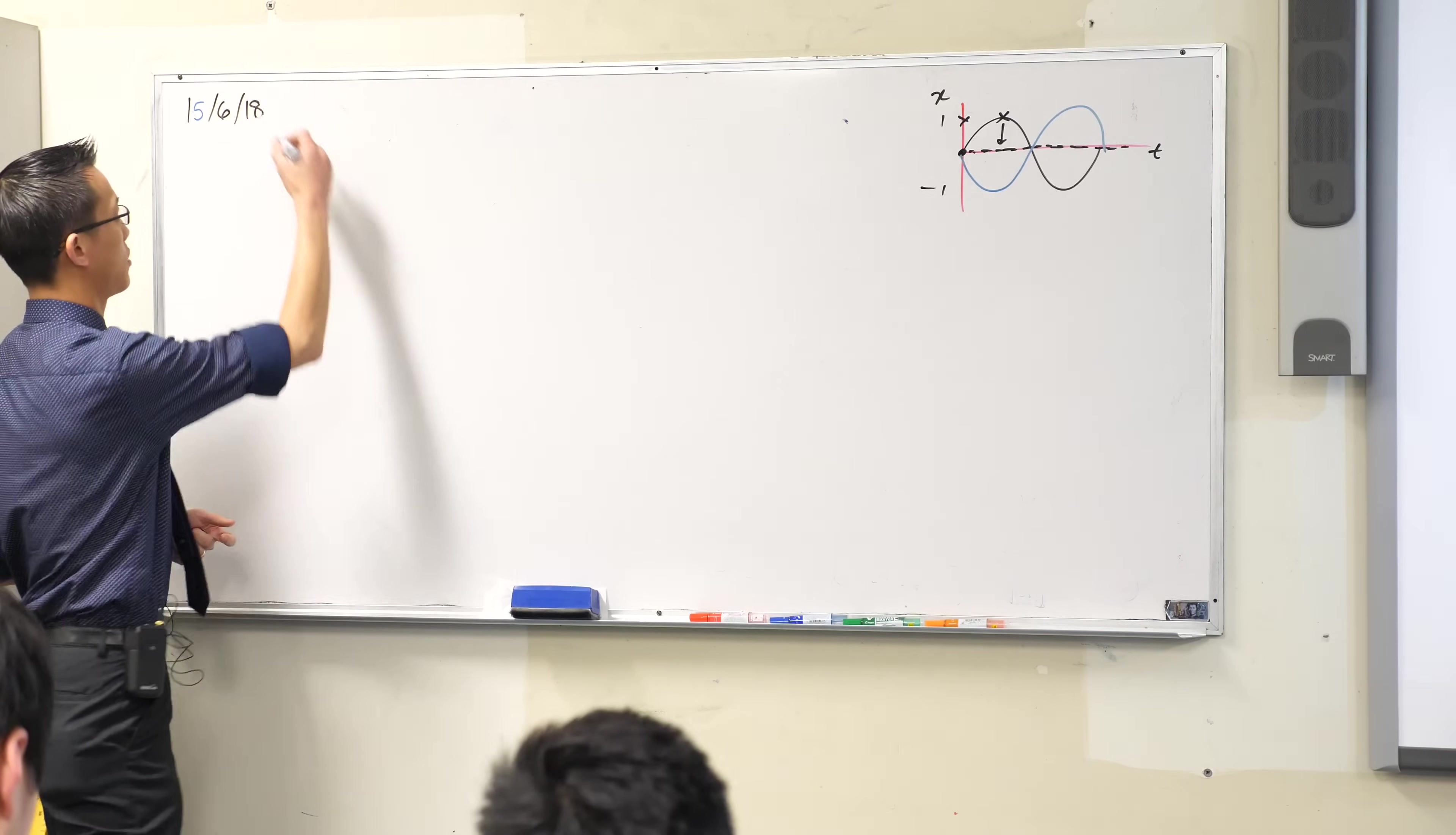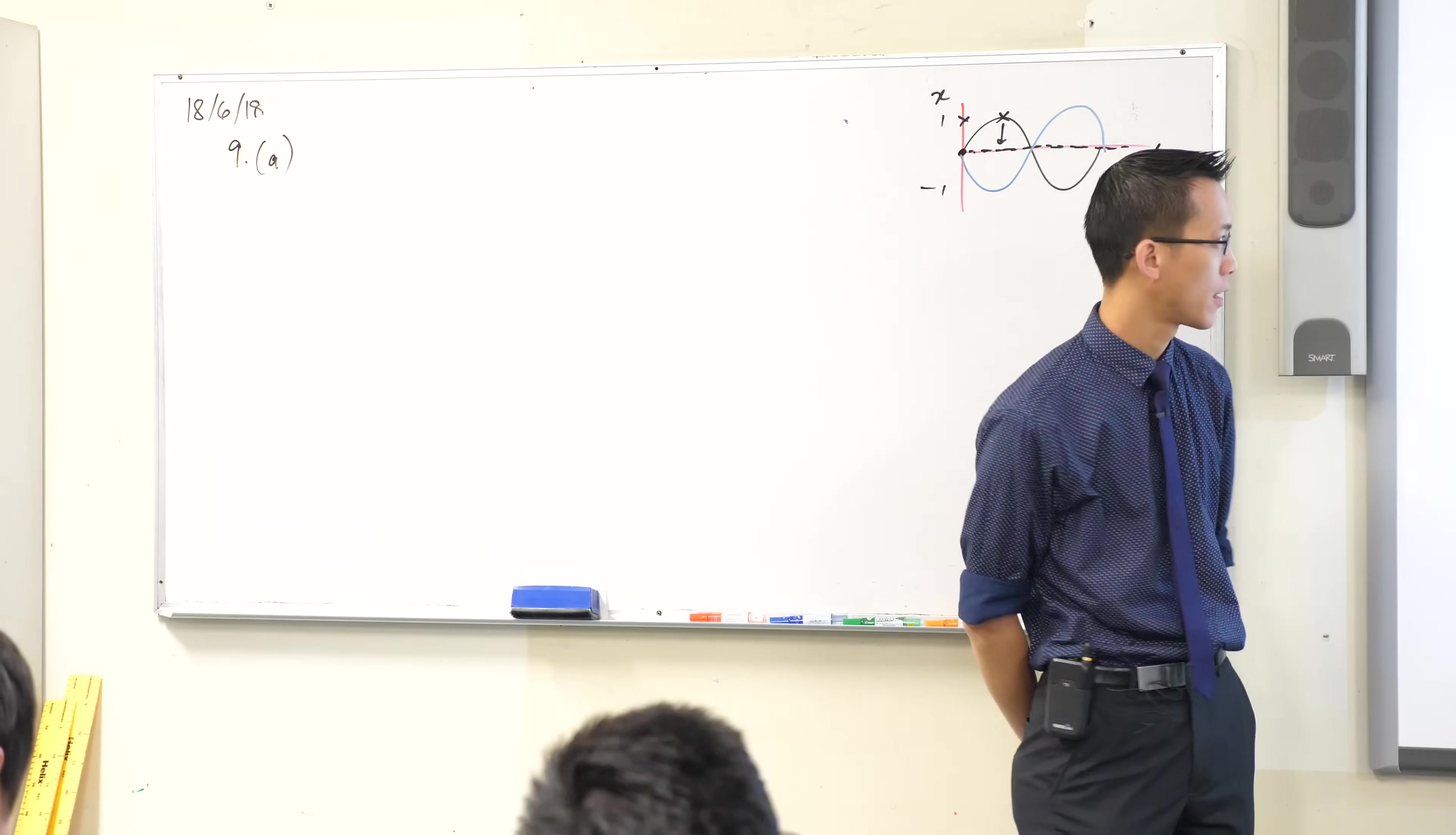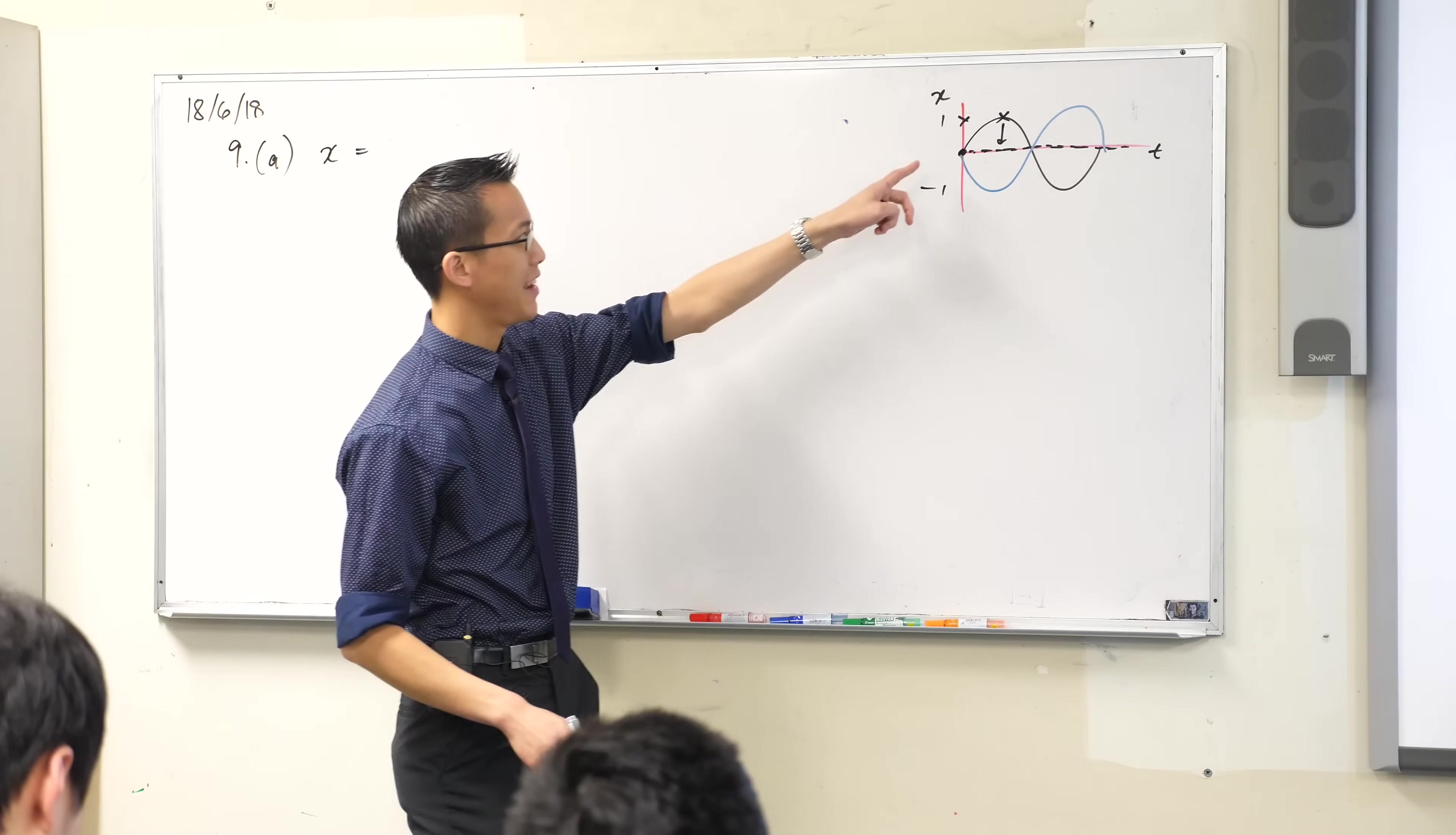So now we've started to fit this all together. Let's now tackle - this is question nine, it's not the 15th anymore - let's tackle part a and it says write down the functions of displacement and velocity and then state the maximum speed. We've already begun to unpack the statement for, sorry, the function for displacement.